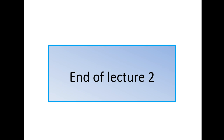That is the end of lecture two — all you need to know on the three types of attachment, Mary Ainsworth's Strange Situation using MOMSSS, and Van IJzendoorn and Kroonenberg's cross-cultural study as a supporting study for Mary Ainsworth.